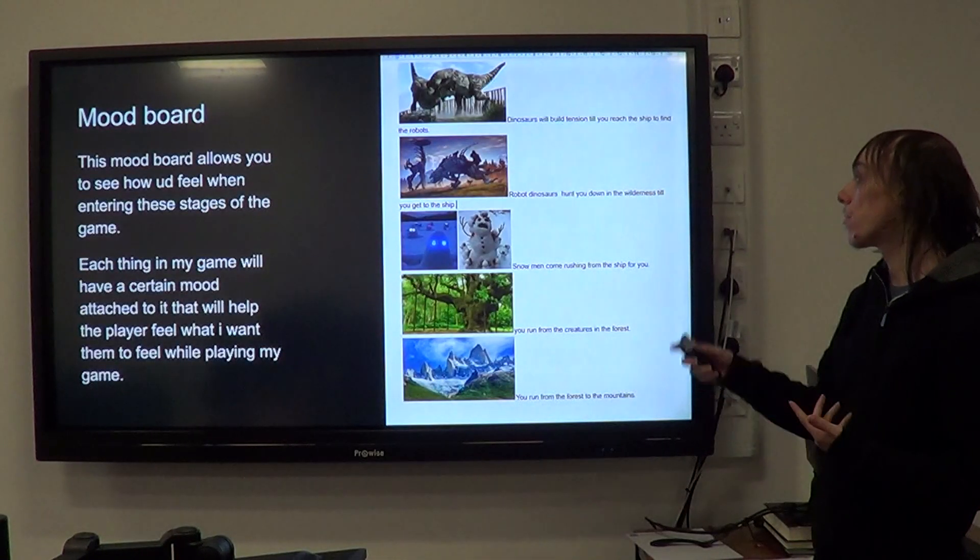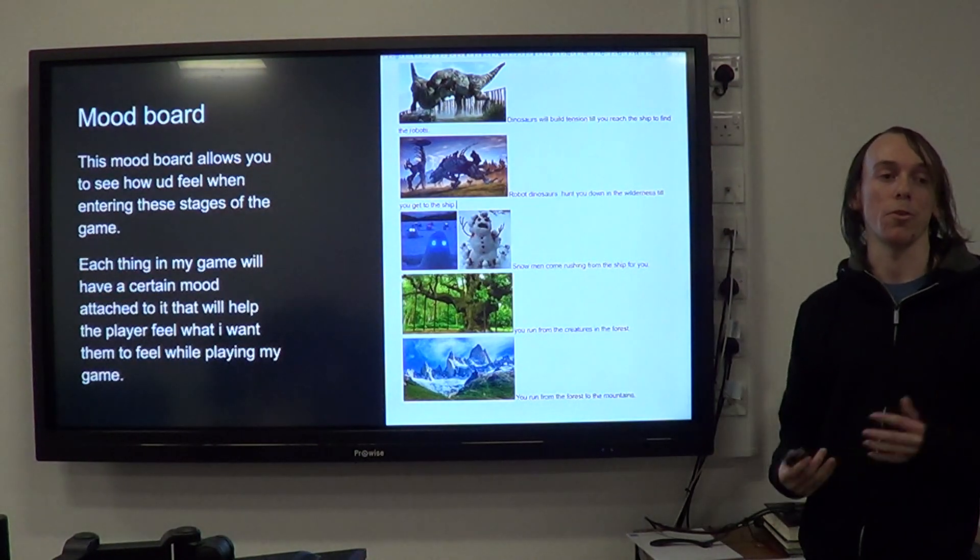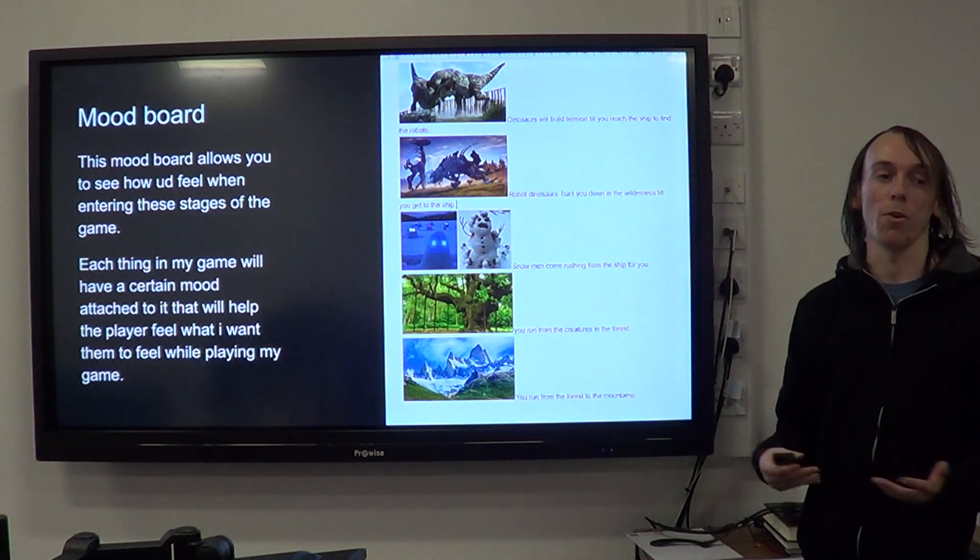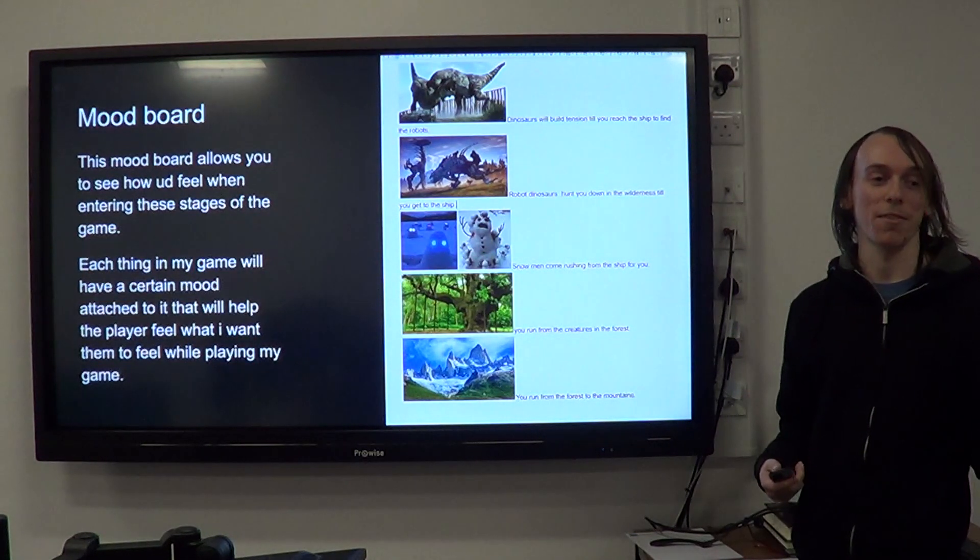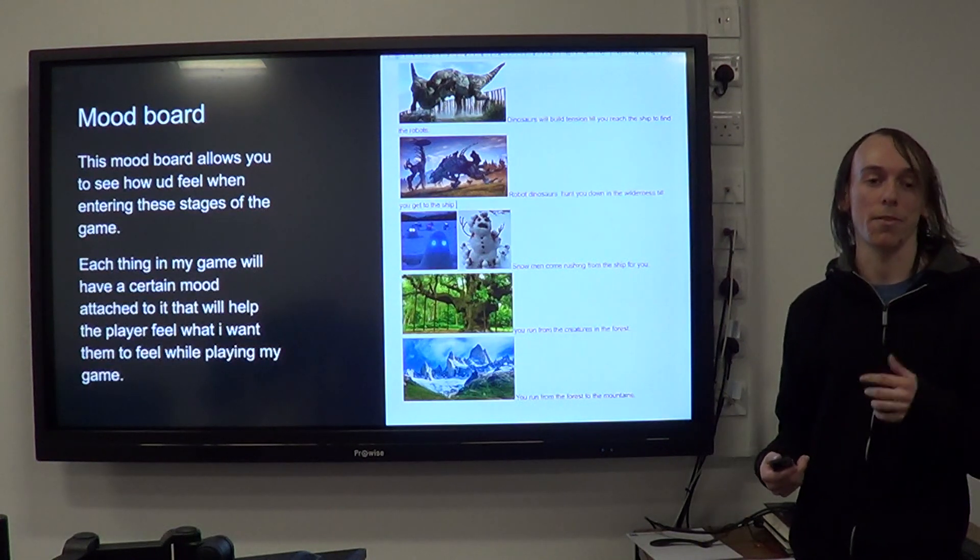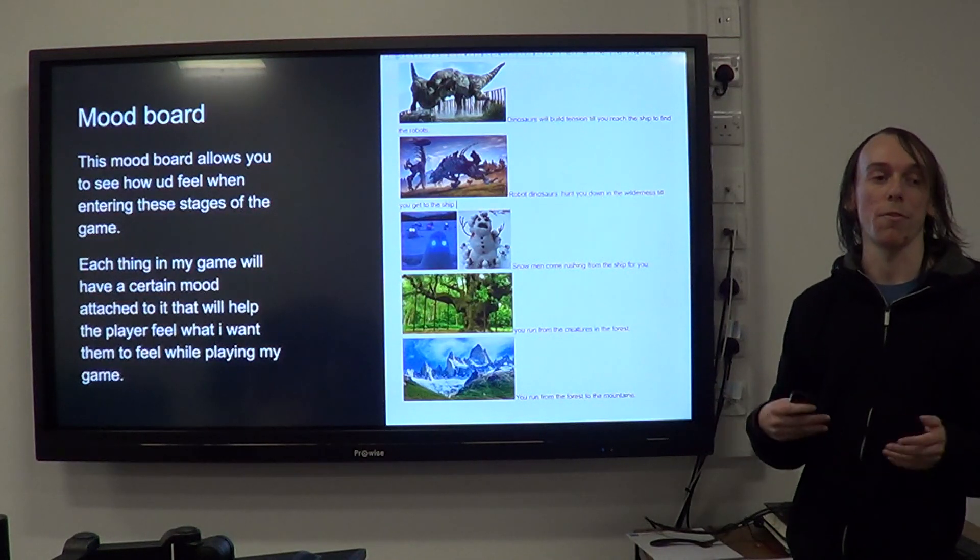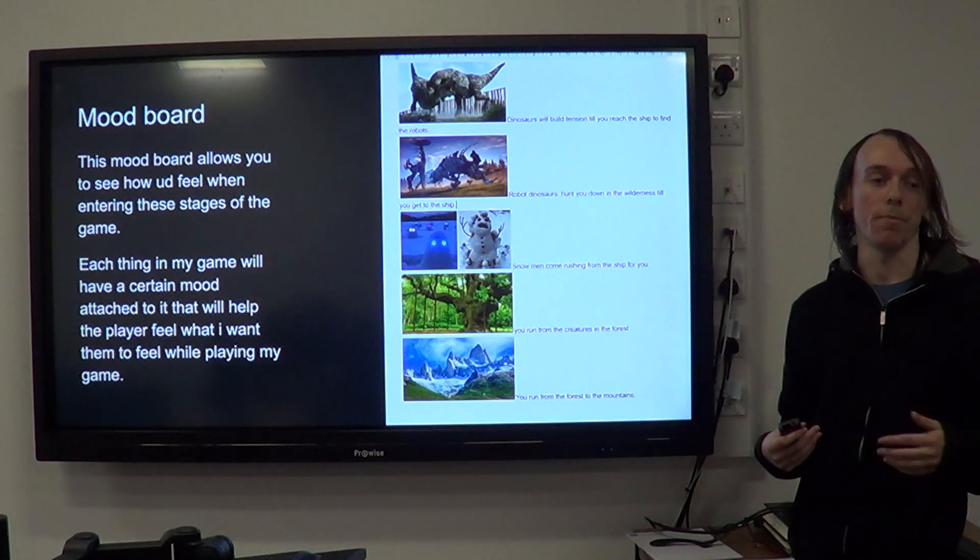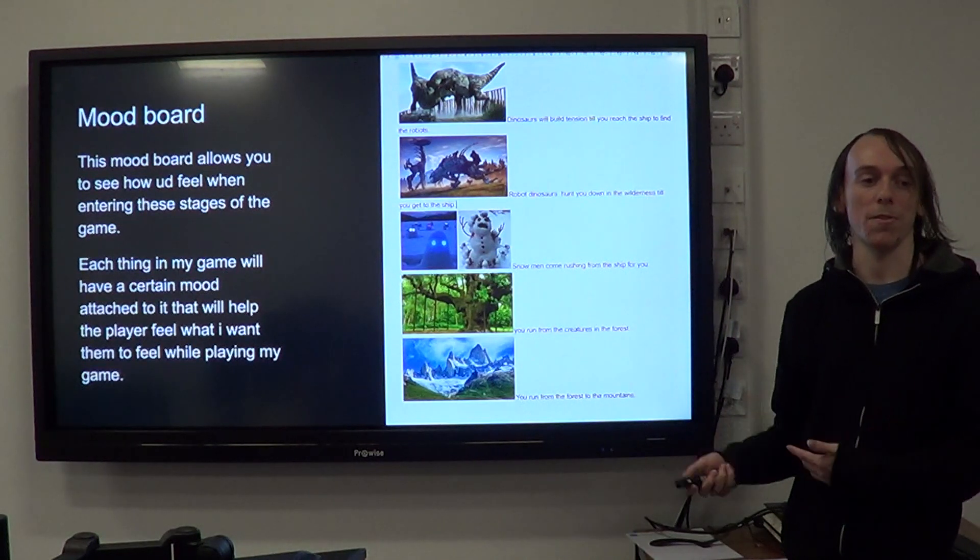It's my mood board, so the dinosaurs build tension, because they're always chasing you, which makes you want to push on to the time machine. The robot dinosaurs are in your pathway, they're in the way, you have to go around them. The snowmen come running at you through the ship, and you have to avoid them to get back to the time machine. The forest, like the trees, are in your way, you have to go around them to get to the time machine. They also slow you down to make the dinosaurs get closer to you if you're too far ahead. Same with mountains, but there will be more like a maze, so you have to find your way to the time machine, so the dinosaurs have time to pick up, but they could also get lost in the maze.